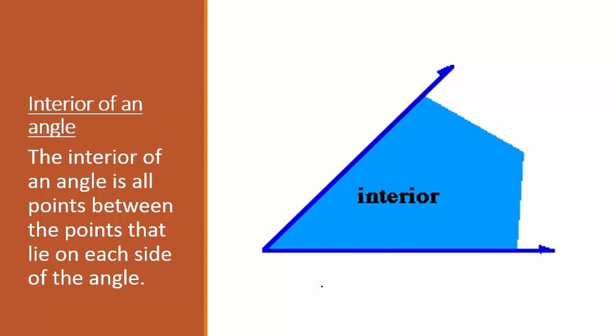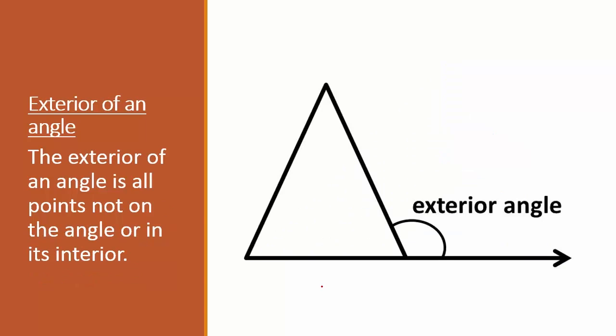Interior of an angle. The interior of an angle is all points between the points that lie on each side of the angle. Exterior of an angle. The exterior of an angle is all points not on the angle or in its interior.